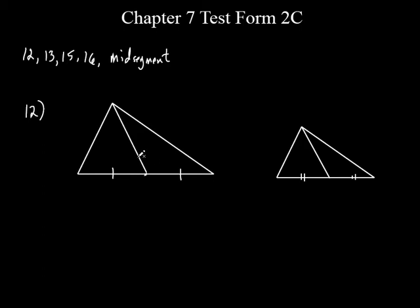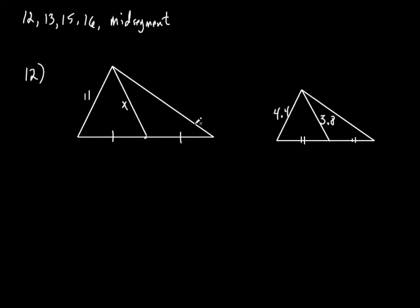On the test I don't say it's a median, but I do mark it like this — I mark these two and these two equal to each other. So that's 11, this is 4.4, and this is 3.8 for that little median right there. The question says find BM, which I'll just call X. You'll see one very similar to this on the test, just written a little bit differently.